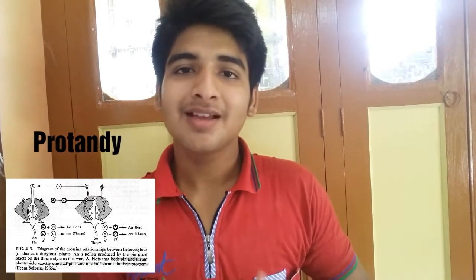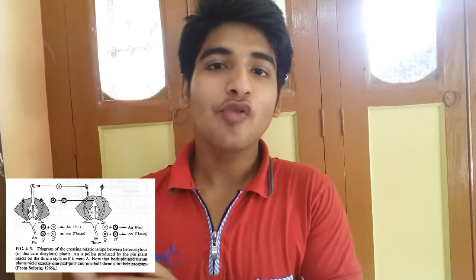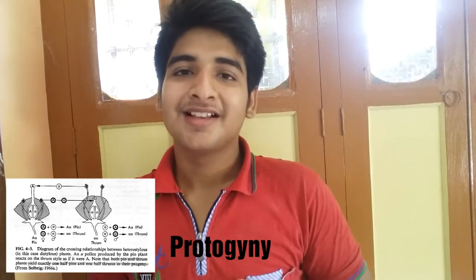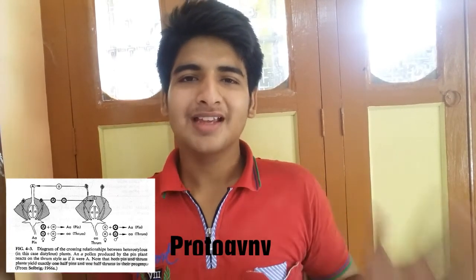In the case where the pollen matures first, this type of flower is called protandry. Where the ovary matures first, this type of flower is called protogyny. I hope you can understand cross-pollination better now.